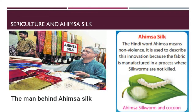Sericulture and Ahimsa Silk (Peace Silk): Sericulture or silk farming is the cultivation of silkworms to produce silk - it is the rearing of silkworms to obtain silk. Ahimsa silk, also known as peace silk: in 1992, a government officer from Andhra Pradesh, India, proposed the Ahimsa way of silk production - making silk without killing the silkworm. It involves a humane method, specifically letting the worms hatch and then using the vacant cocoons. Traditional silk manufacturing involves boiling the cocoons and sorting out the threads for silk production. Ahimsa silk has been supported by many people interested in the welfare of animals.